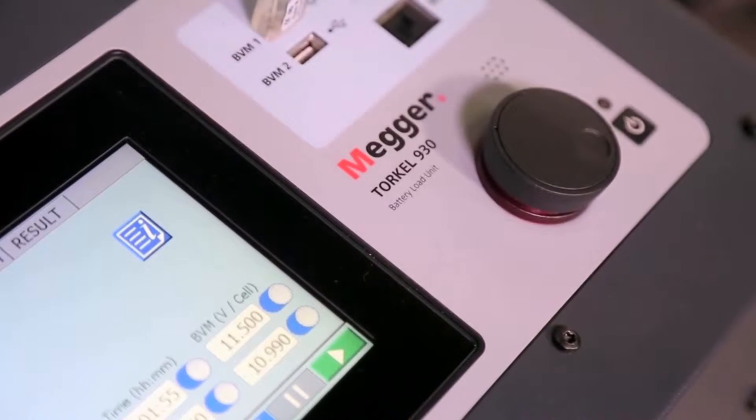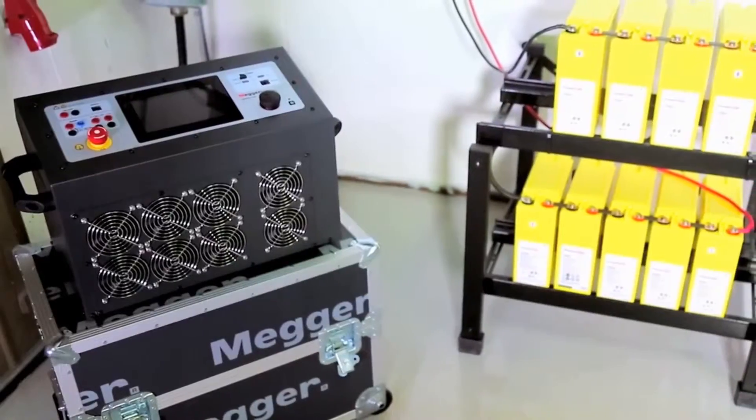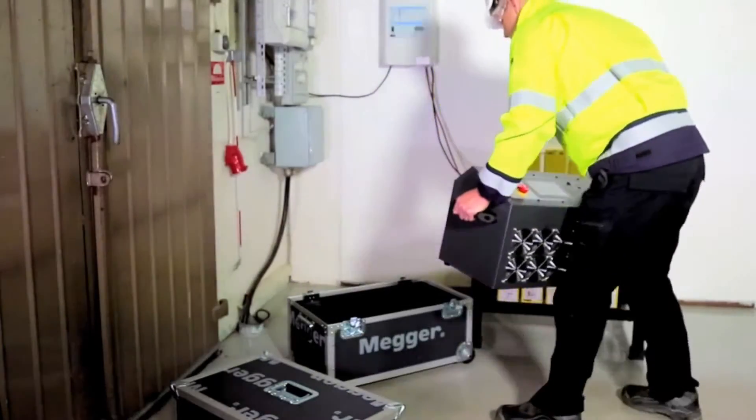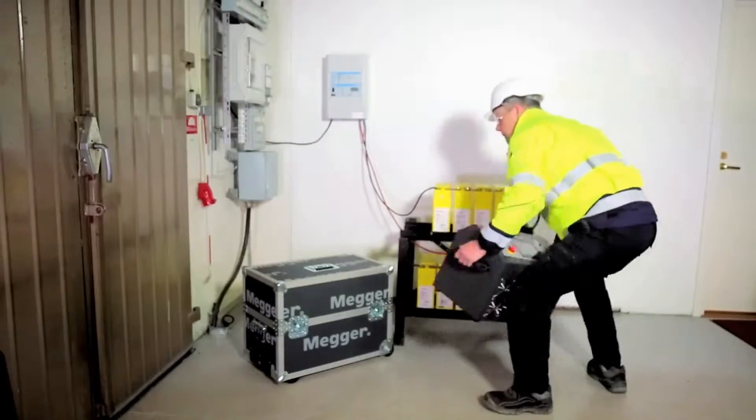Torkel 900 performs load tests or discharge tests to determine battery system's actual capacity. The instrument is lightweight enough to be carried by one person, as well as be checked in as luggage on flights.